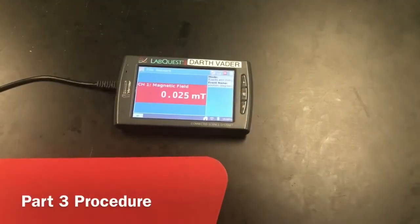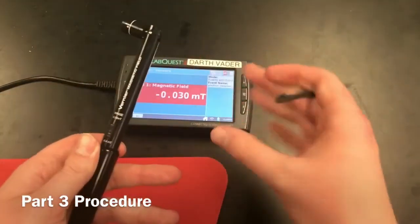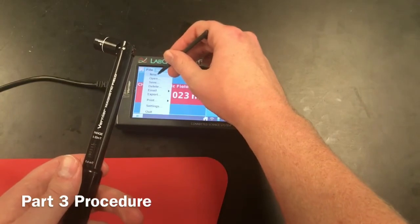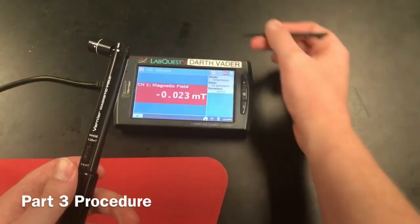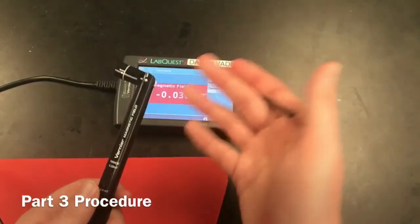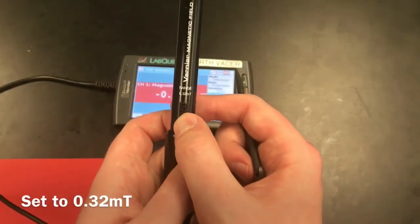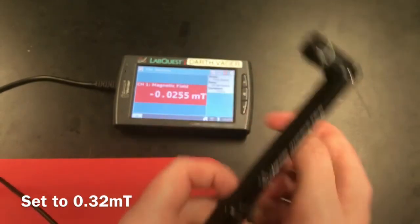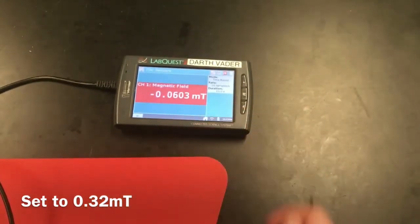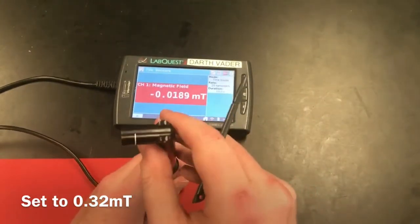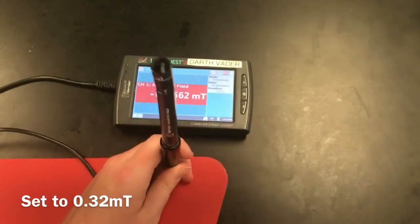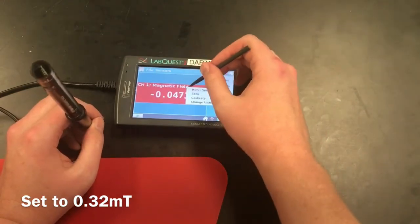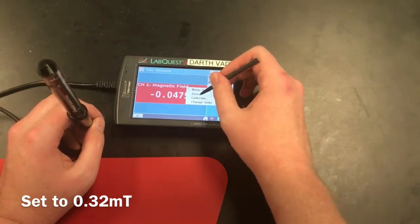For part three of the lab, we're going to use our magnetic probe and our LabQuest. I'm going to clear this out really quick so we have a new live reading. Make sure to set your probe to 0.32 for this experiment. The reason that we're doing that is because you'll get a more accurate reading at four decimal places. Push your probe so that the tip is facing up, and when you do this, zero out your magnetic reading on your LabQuest device.